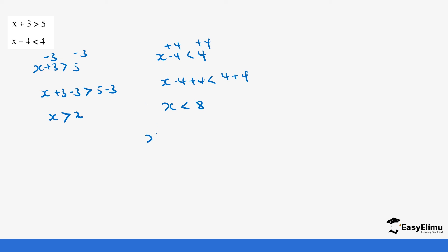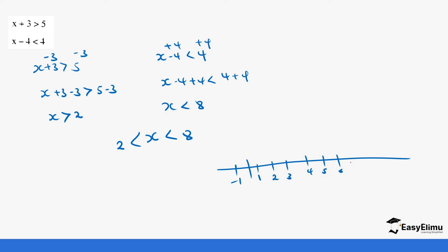So x is greater than 2 but less than 8. On the number line, most of the work is on the positive side: 1, 2, 3, 4, 5, 6, 7, 8, 9, 10. Our values lie between 2 and 8. Neither 2 nor 8 are part of the values of x, so we draw open circles at both points and shade the region between them.